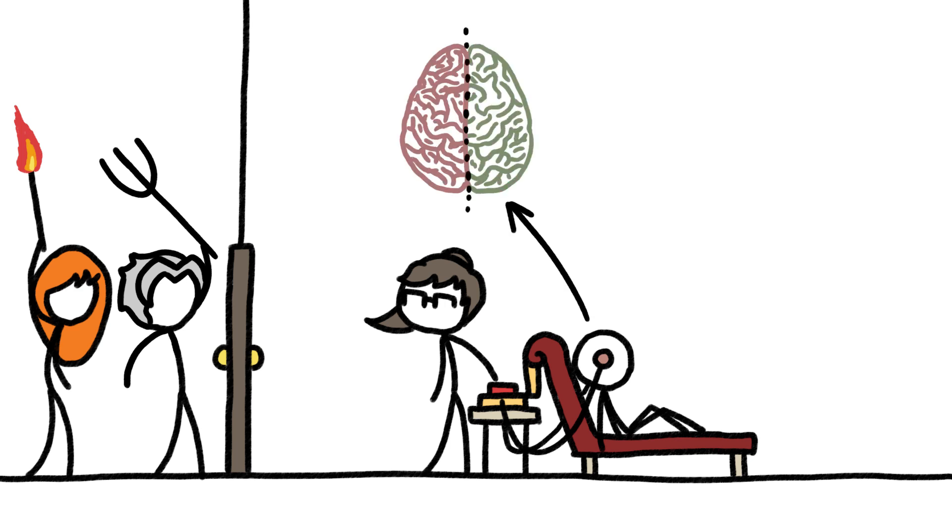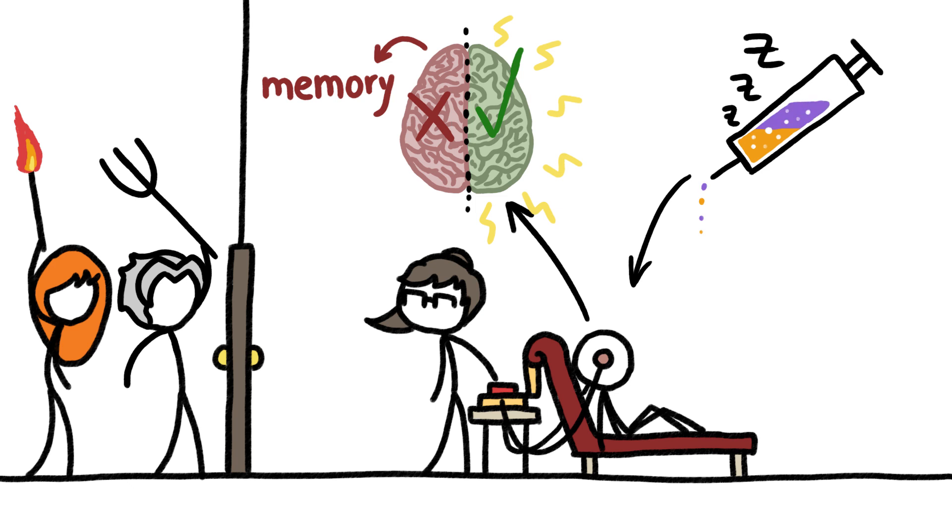But they began targeting the current to one side of the brain to try to reduce effects on memory, and using anesthesia and muscle relaxants to prevent painful convulsions, keeping the good effects while reducing the side effects.